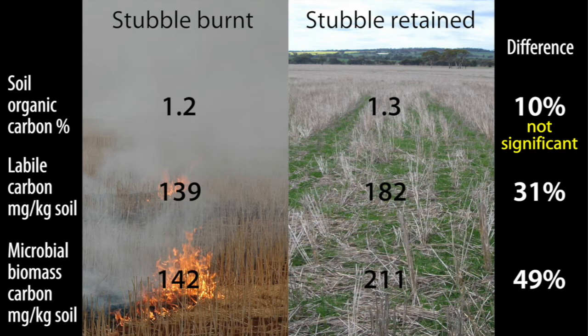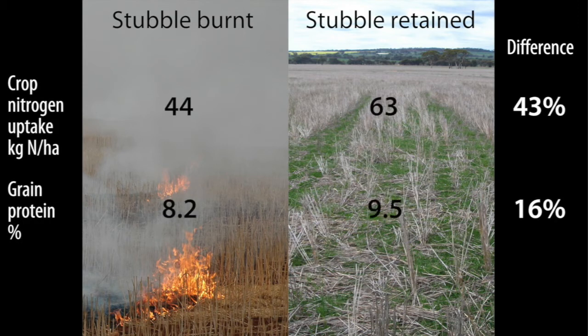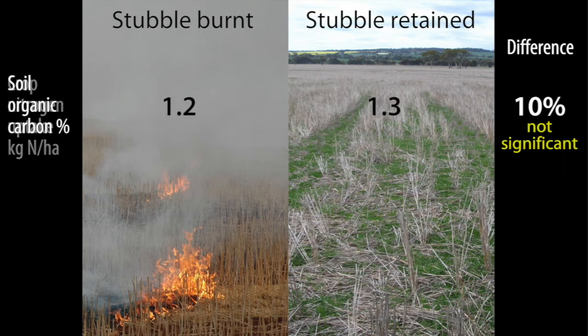Two soils, same carbon value, different biological functioning. The straw retained system has a far higher level of biological cycling, and that actually translates in this trial through to additional nitrogen supply to the crop, and that translates through to a grain protein increase.